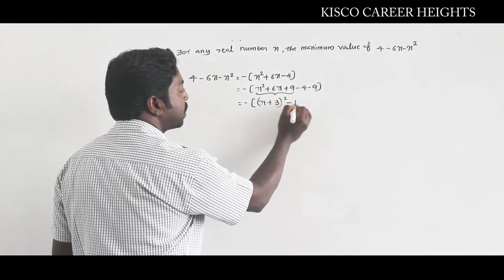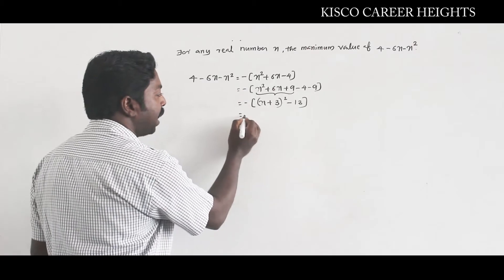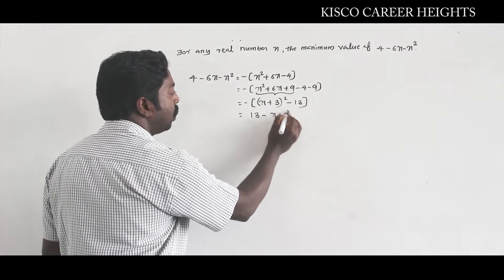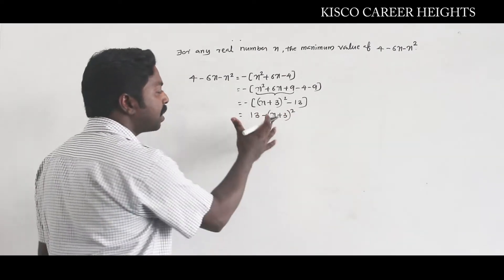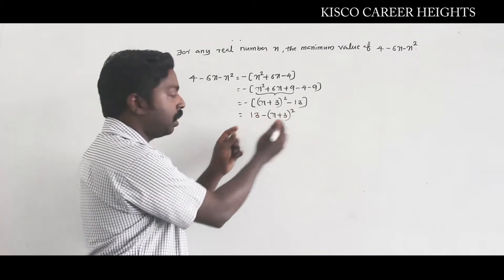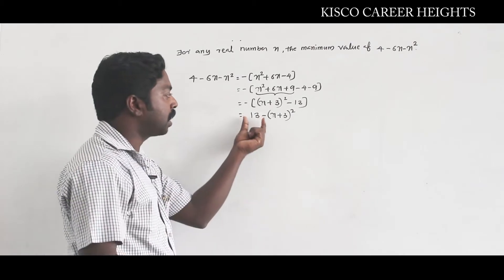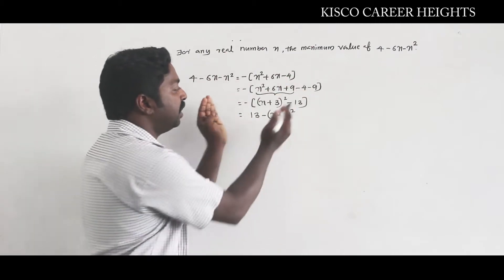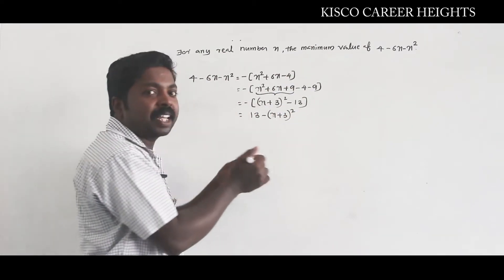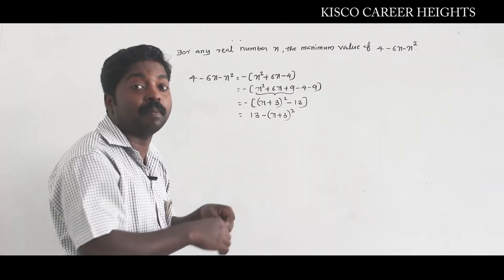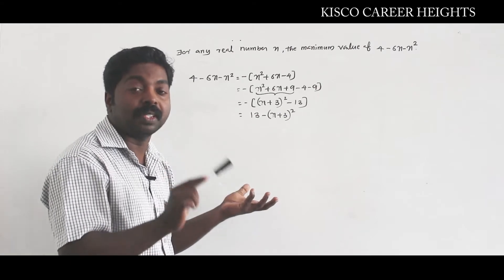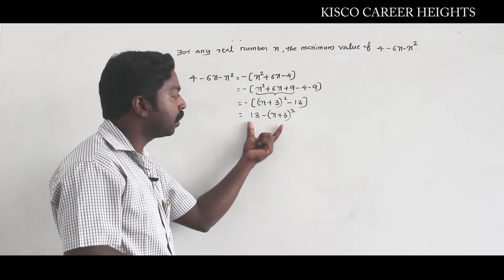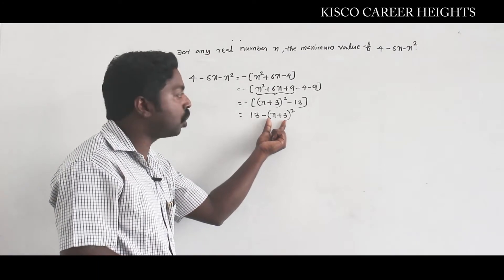The second part is exactly minus 13. When we operate using the minus sign, it turns to 13 - (x + 3)². This is like an orange where some portion is carved out. If we take 13 as the orange, we want to find the maximum value of this expression. To get the maximum, zero portions should be carved out, meaning (x + 3)² should be minimum.